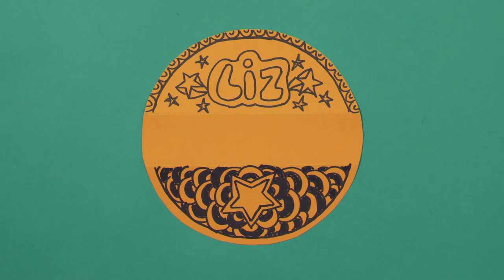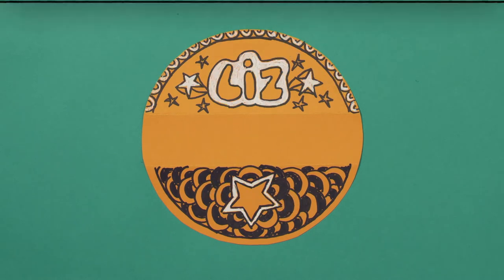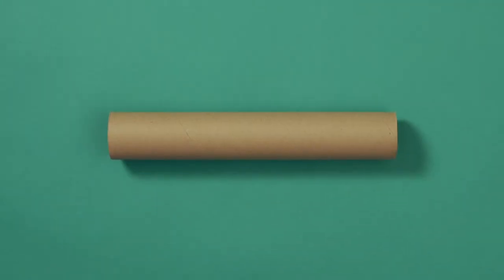Now you've got the base of the pencil holder. Take your cardboard tube and cut it into three smaller tubes of different sizes like this.